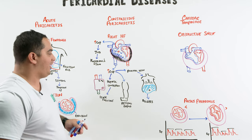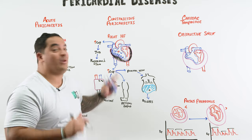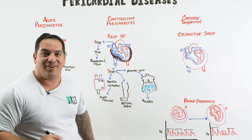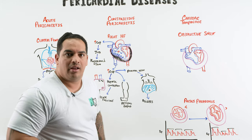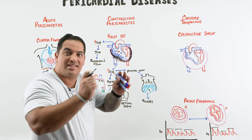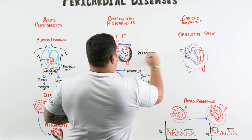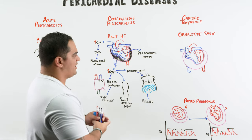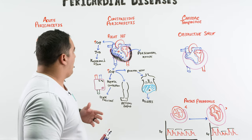How do you differentiate constrictive pericarditis from restrictive cardiomyopathy? Both have right heart failure features and Kussmaul's sign. The key differentiator for constrictive pericarditis is the pericardial knock — when the ventricles try to distend against the rock-solid pericardium, it makes a knocking sound. That's one clinical differentiator; otherwise, echocardiogram or other modalities are needed.